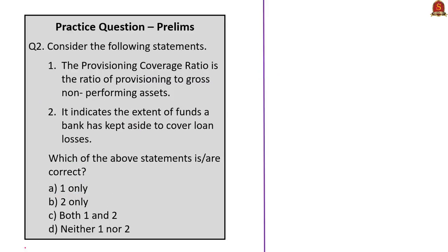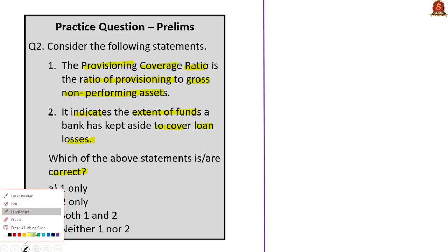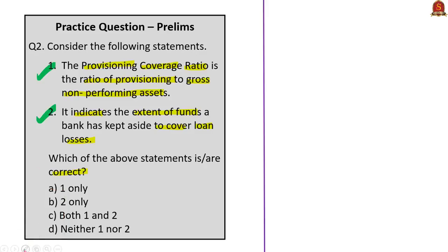Moving on to the second question: consider the following statements. Statement 1: The provisioning coverage ratio is the ratio of provisioning to gross non-performing assets. Statement 2: It indicates the extent of funds a bank has kept aside to cover loan losses. Both statements are correct. For non-performing assets, banks must set aside money to cover losses — that is provisioning, which is the numerator in the ratio of provisioning to gross non-performing assets. The correct answer is option C, both 1 and 2.